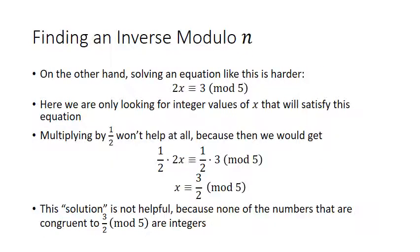What if we wanted to solve a similar relation — 2x congruent to 3 modulo 5? It looks similar but it's a congruence, not an equation. We're looking for all integer values of x that will satisfy it. For example, x equals 4 satisfies it because 2 times 4 is 8, and 8 is congruent to 3 modulo 5. Another value is x equals 9, because 2 times 9 is 18, and 18 is congruent to 3 modulo 5.